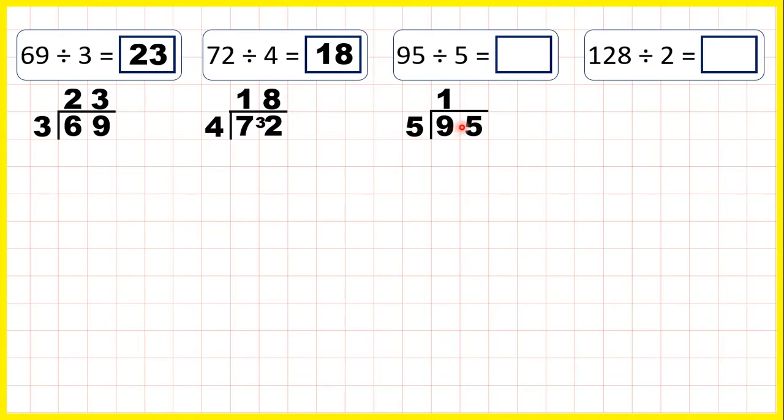So 9 divided by 5 is 1, remainder 4. So now we have 45 divided by 5, which is 9, because 9 times 5 is 45. So our answer is 19.